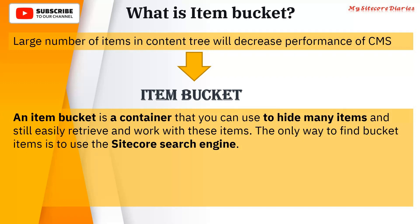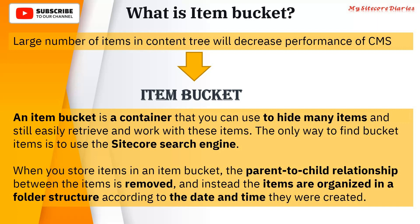Item bucket is a container which stores items but hides those items from the user. You can retrieve those items by using the Sitecore search engine. When you store an item in the item bucket, the parent-child relationship in the tree view is removed. So when you convert an item into an item bucket, it removes the parent-child relationship.